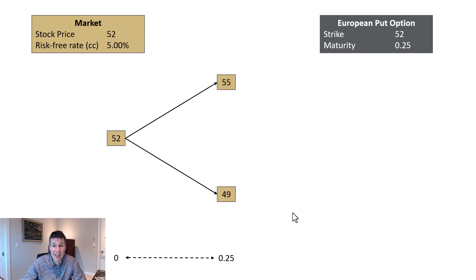If the stock ends up at 55, then the European put option is worthless. Why is it worthless? Because the European put option gives us the right to sell the stock for 52, and we could sell it in the market for 55, so we're not going to exercise that put. On the other hand, if the stock ends up at 49, the right to sell it for 52 in a market where the stock is at 49 is worth $3. What are we trying to figure out? We're trying to figure out what the price of the put is today.